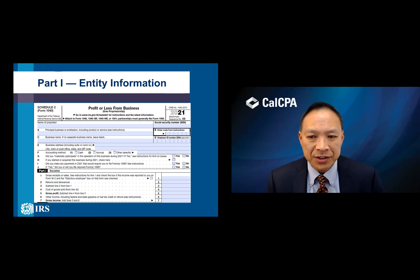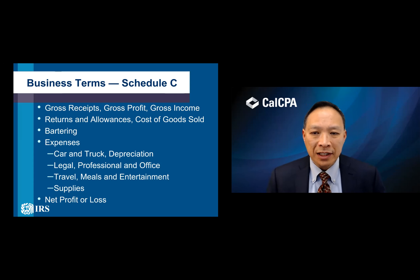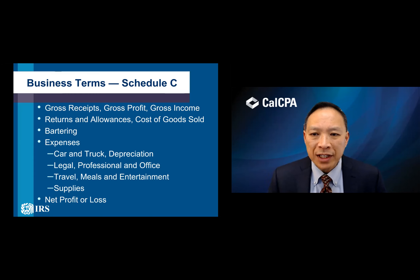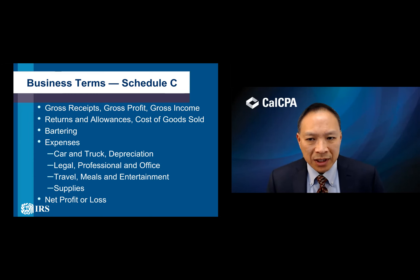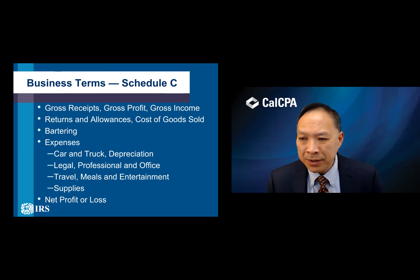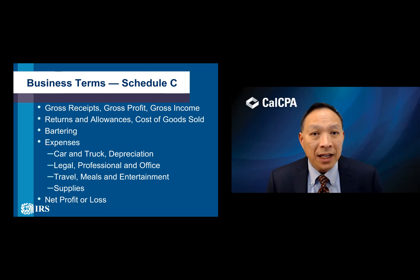Line one is gross receipts or sales — that's the gross income you earn from your business. The first lines cover gross receipts, gross profit, and gross income — what you're receiving for selling your product, services, or whatever kind of business you're doing. Returns and allowances are like refunds or early-payment discounts. Cost of goods sold covers the cost of your inventory. Bartering is also income — if you barter for services or products, that's still income, just like cash, so make sure you include your bartering.